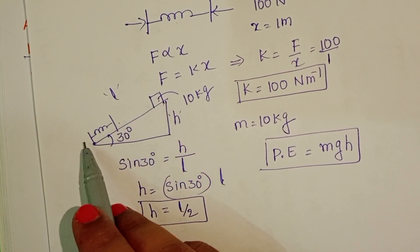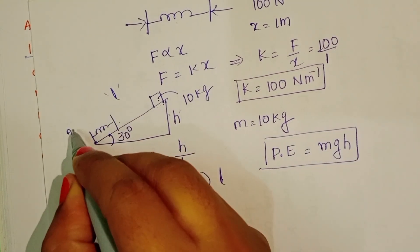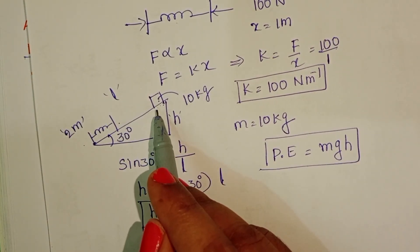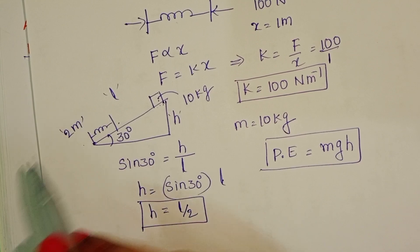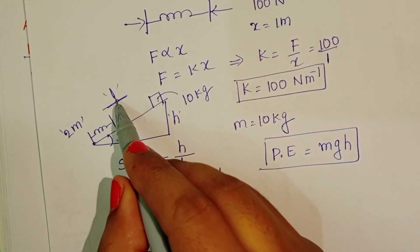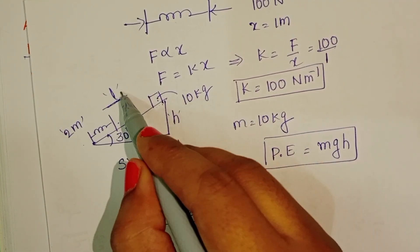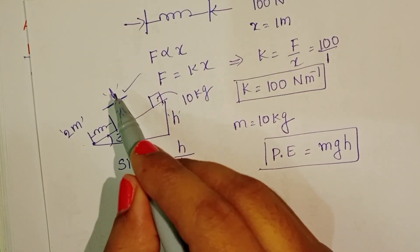After releasing this block, it compresses the spring by 2 meters. We have to find out the distance travelled by the block on the inclined plane. Here the distance travelled by the block is l. So we have to find out the value of l.